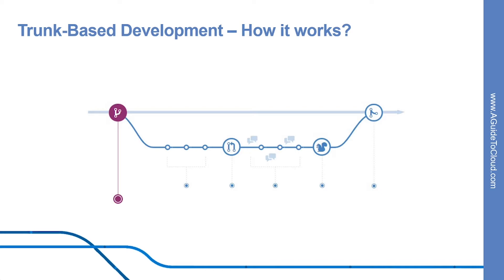Feature branches should have descriptive names — the idea is to give a clear, highly focused purpose to each branch. Git makes no technical distinction between the master branch and the feature branches, so developers can edit, stage, and commit changes to a feature branch.